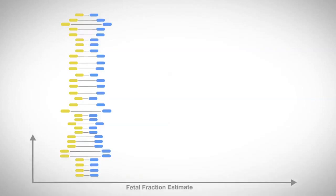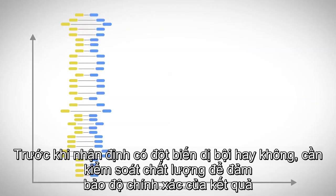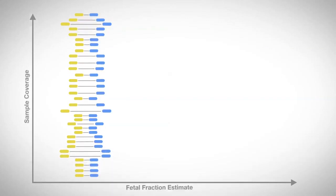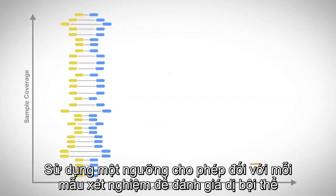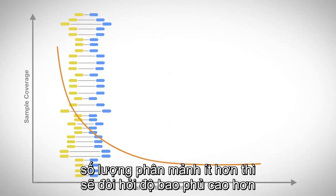Prior to assessing aneuploidy status, quality controls ensure confidence in reported results. One notable metric uses a dynamic threshold for each sample to detect aneuploidy. Those with lower fetal fraction estimates have higher coverage requirements.